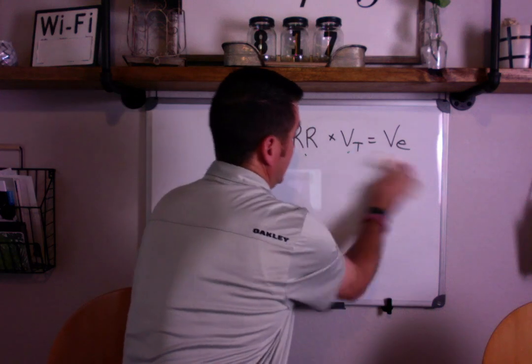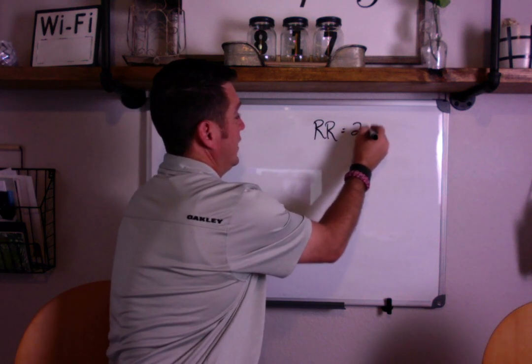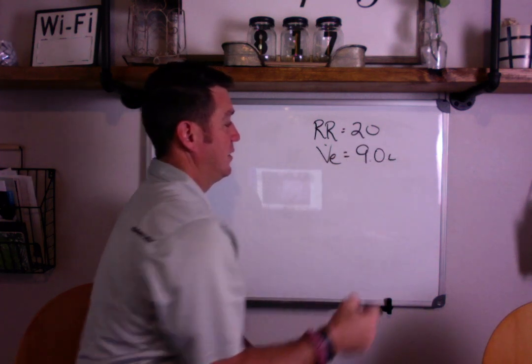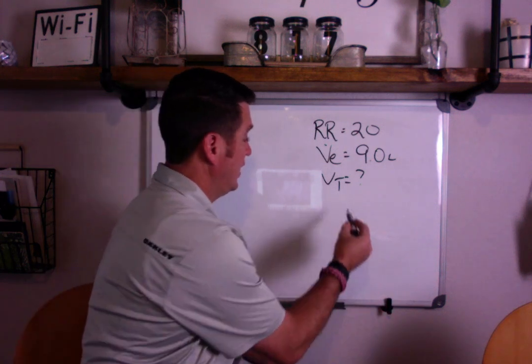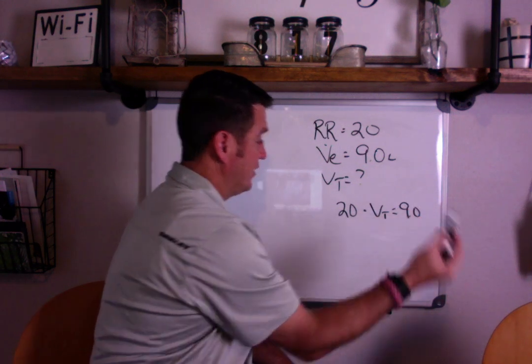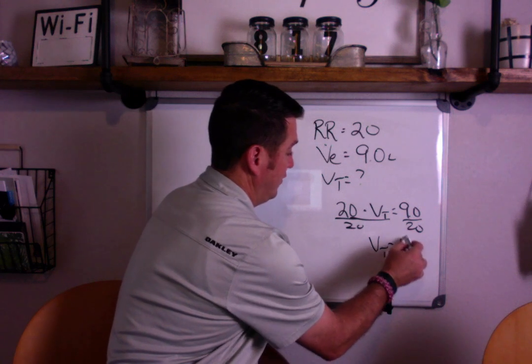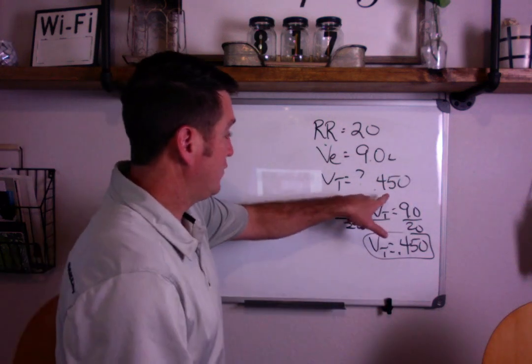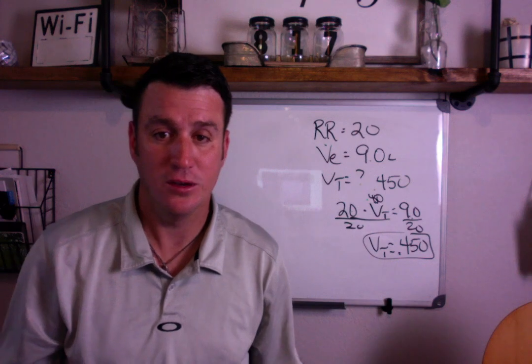So I'm going to erase this and give you some examples. If you have a patient breathing with a respiratory rate equals 20, and the minute volume equals 9 liters, then what is your tidal volume? So if we set this up, respiratory rate times tidal volume equals 9 liters. Divide both sides by 20, and you'll get tidal volume equals 0.450. If you want to check yourself, you just plug 0.45 back in here, multiply it times 20, and see if you don't get 9, and you will.